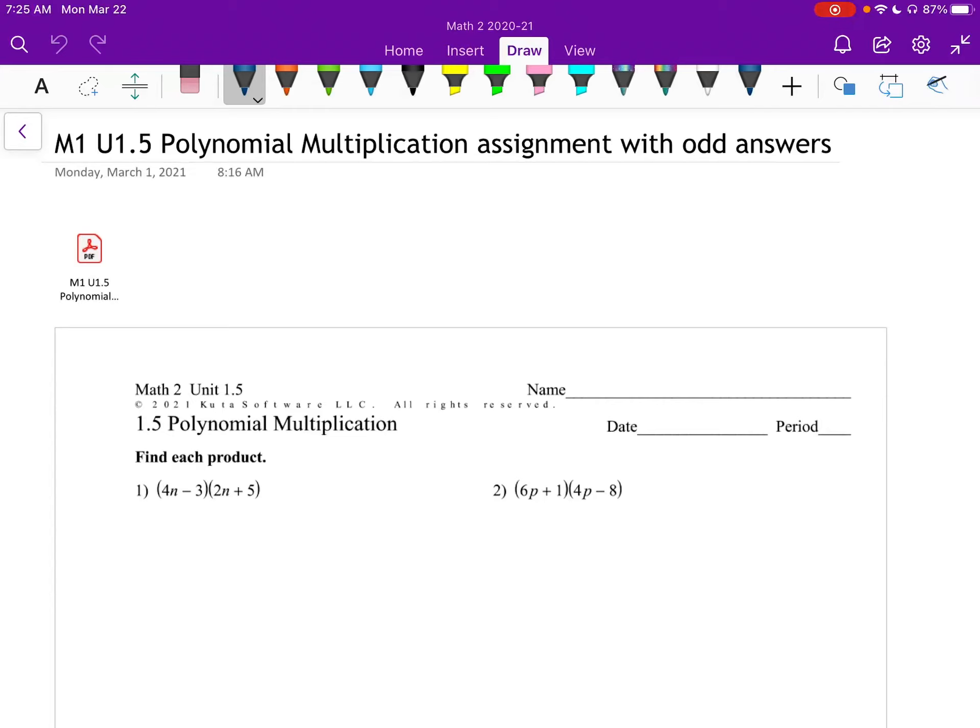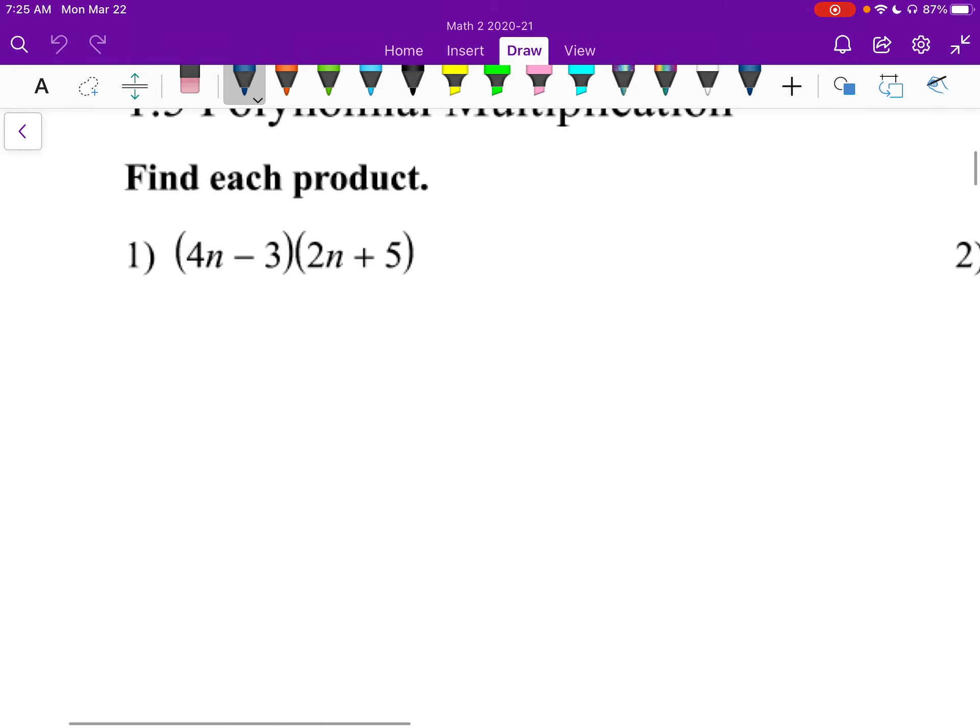Alright, 1.5 polynomial multiplication. Just like in 1.4 when we added and subtracted, I don't have a notes sheet for this. This is just the homework, and I'm going to do a few of these with you to get you started. Starting off, the way to think about this is that we have two polynomials, right? They're both binomials, and we're going to multiply them.